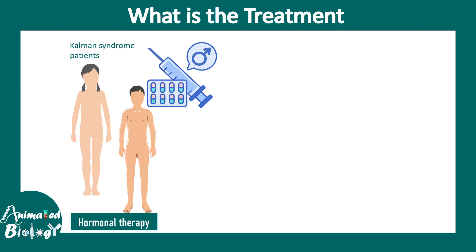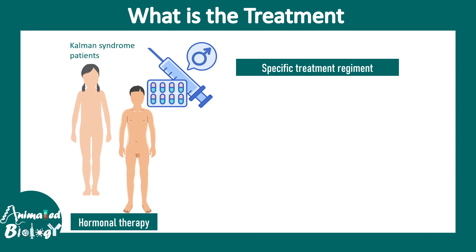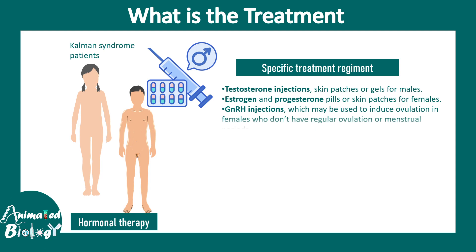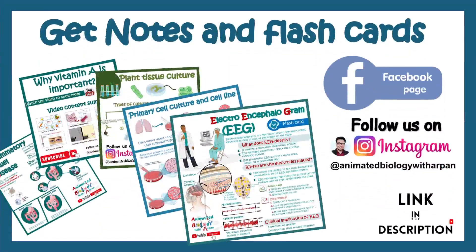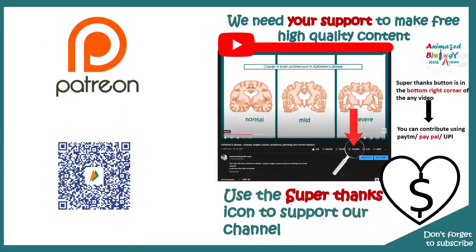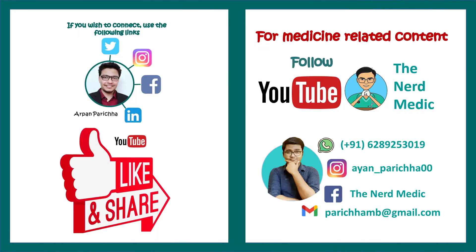For treatment of Kallmann syndrome, specific regimens of hormonal therapy can help. For example, testosterone injections, estrogen and progesterone pills, GnRH injections, or HCG injections can restore the hormonal axis and allow the transition to puberty. I hope the overall video was useful — if you liked it, give it a thumbs up, like, share, and subscribe.